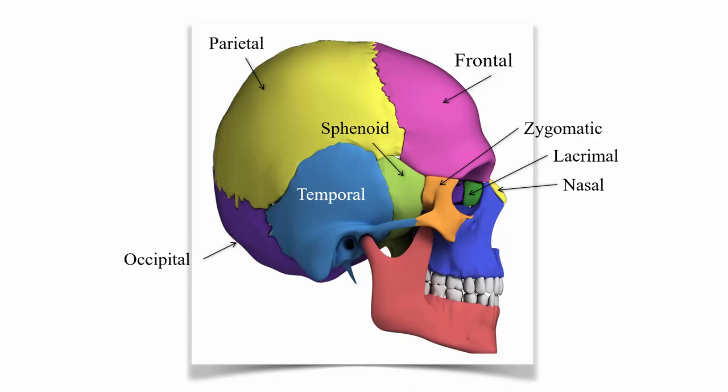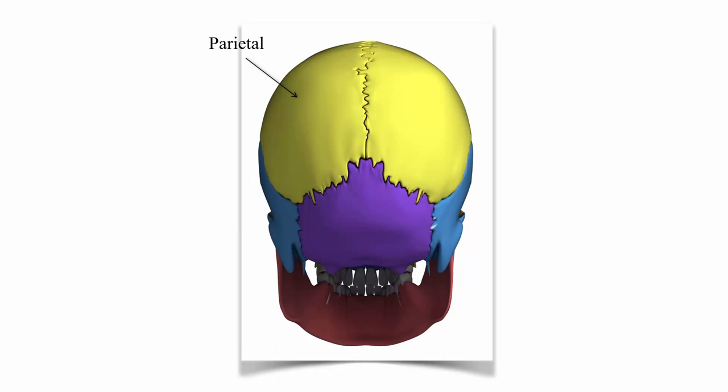Here's the nasal bone, and here's the maxilla and the mandible. Looking at a rear view of the skull, we have the parietal bones on each side, the temporal bones on each side, and then the occipital bone. We can also see the mandible here.